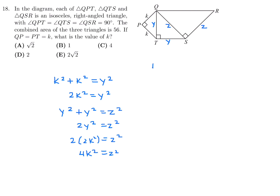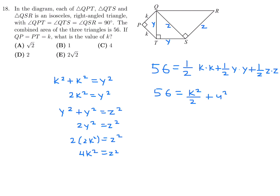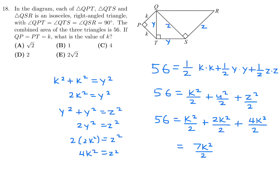Total area equals 56, so (½)K² plus (½)Y² plus (½)Z² equals 56. Substituting in terms of K: K²/2 plus 2K²/2 plus 4K²/2 equals 7K²/2 equals 56. So 7K² equals 112, and K² equals 16, meaning K equals 4. Number 18, the answer is C.